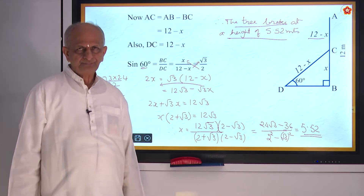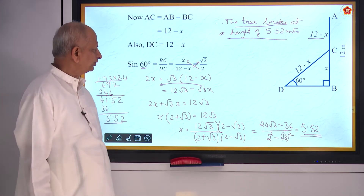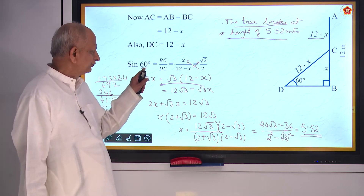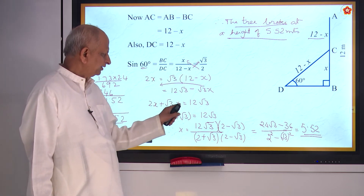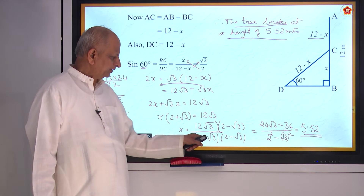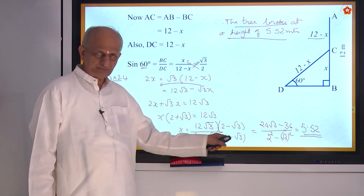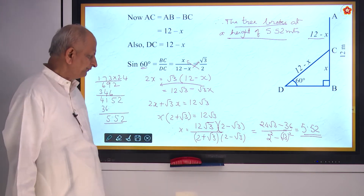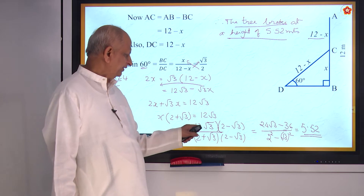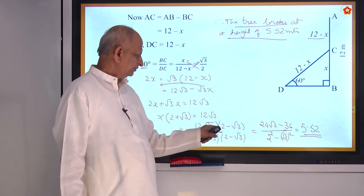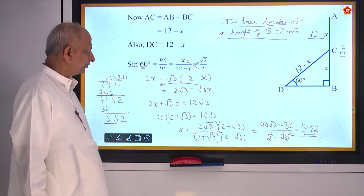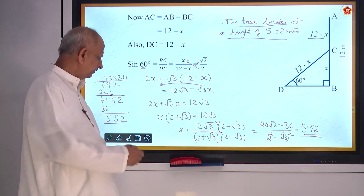We took the sine value, cross-multiplied, and rationalized the denominator — that is how we got 5.52 meters.